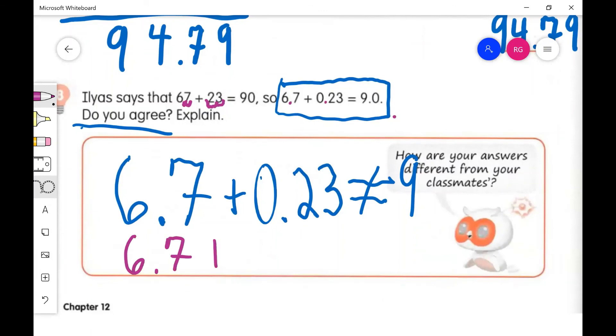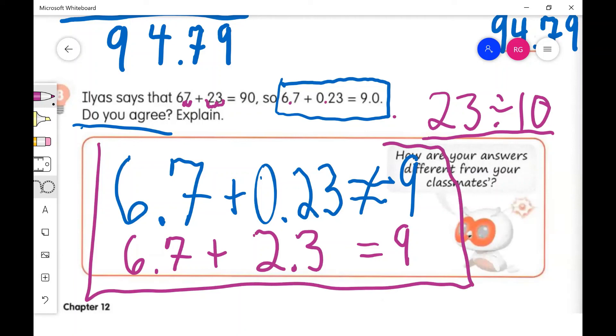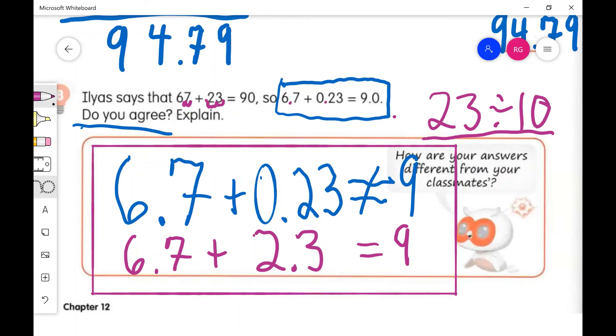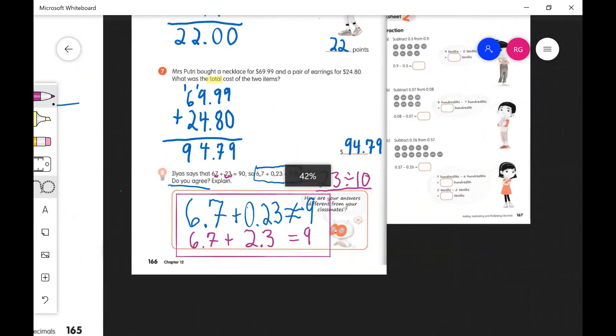What plus what is actually 9? 6.7 plus what is actually 9? What's 23 divided by 10 guys? Yeah, 2.3. So you could write this right here for your explanation. That's page 166, let's move on.